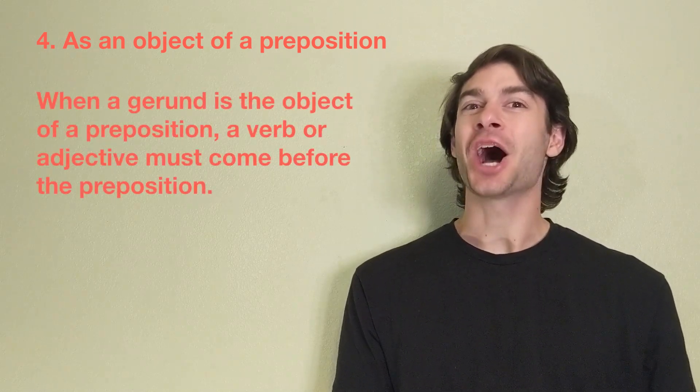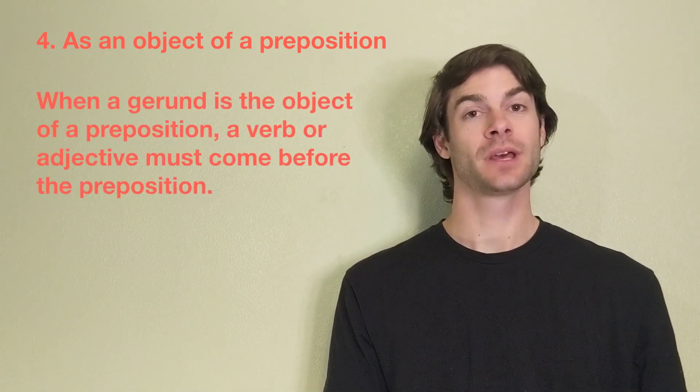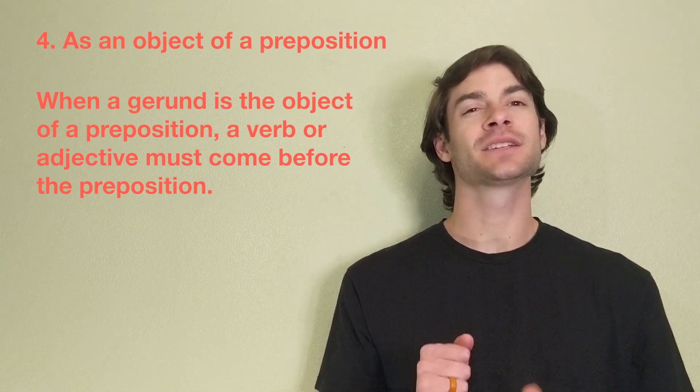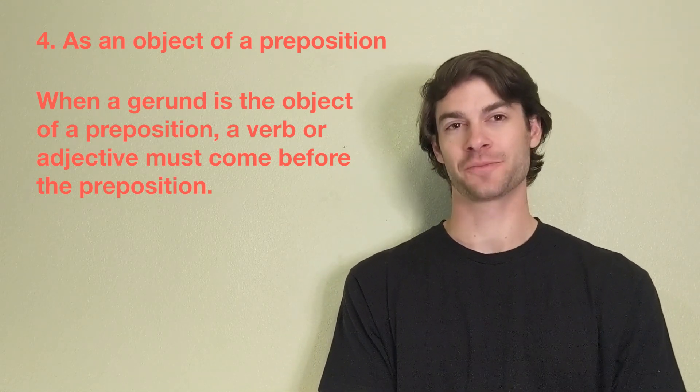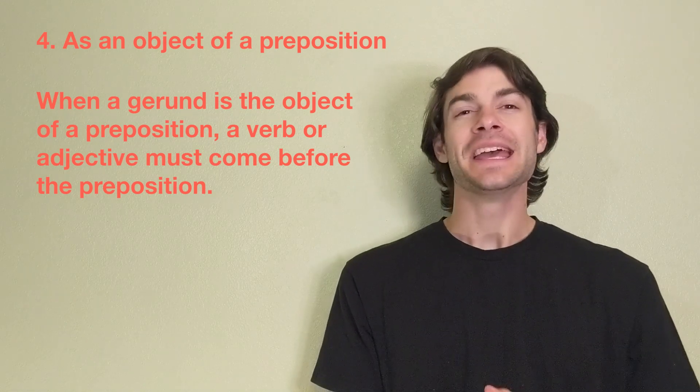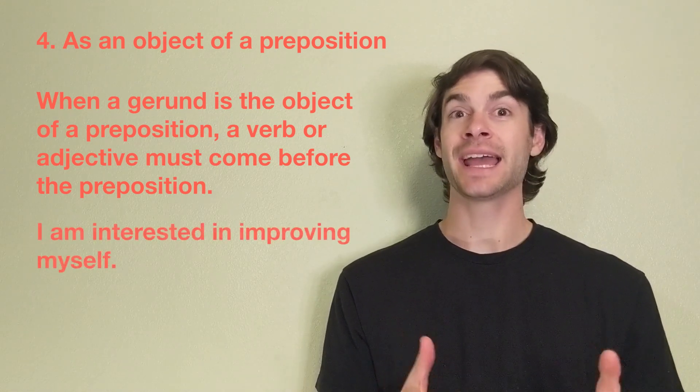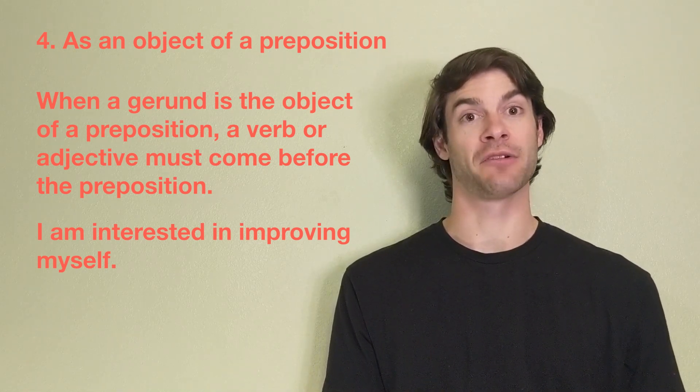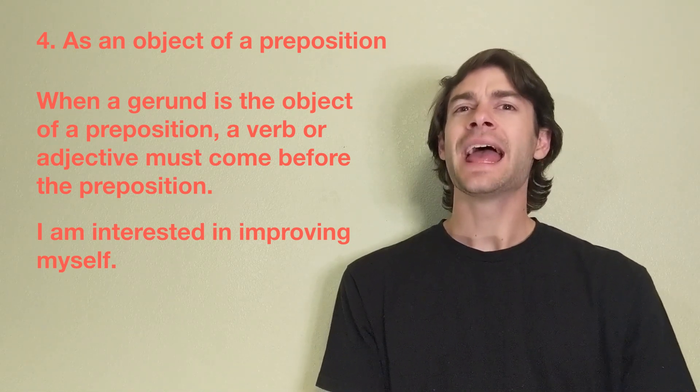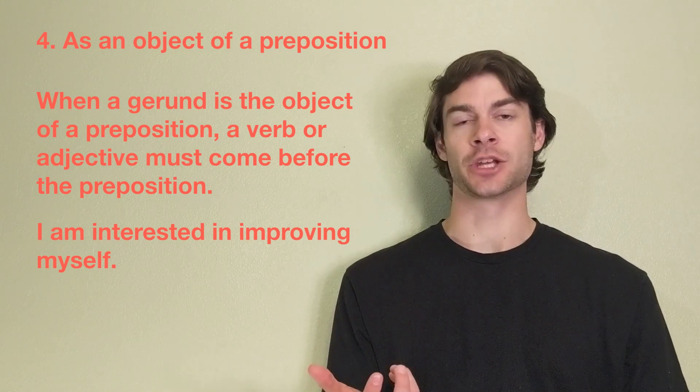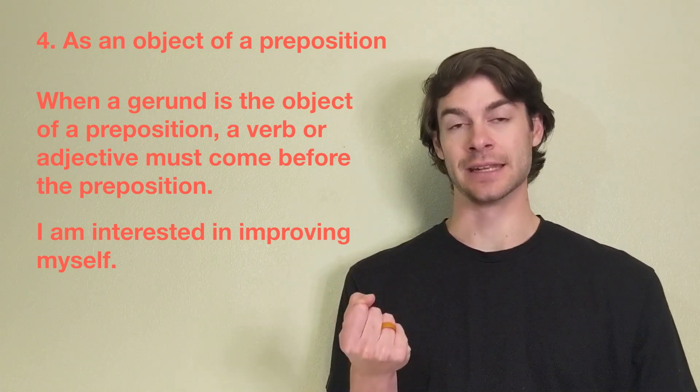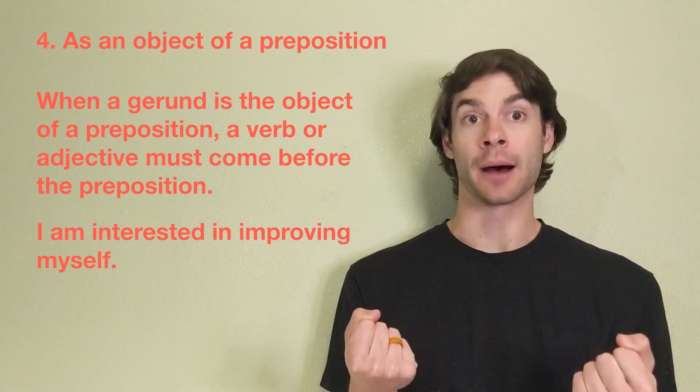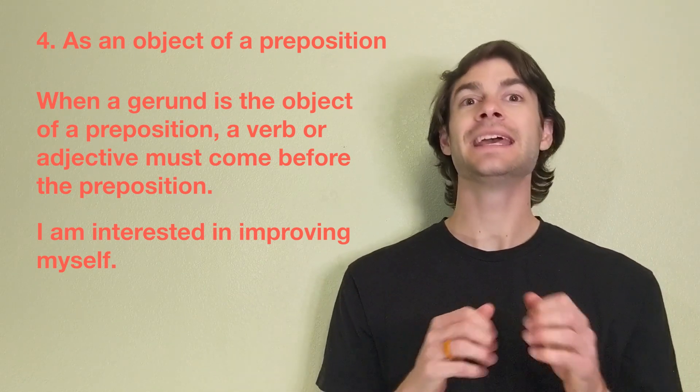When a gerund is the object of a preposition, a verb or adjective must come before the preposition. For example, in the sentence, I am interested in improving myself, the verb and preposition combination, interested in, is followed by the preposition's object, the gerund, improving.